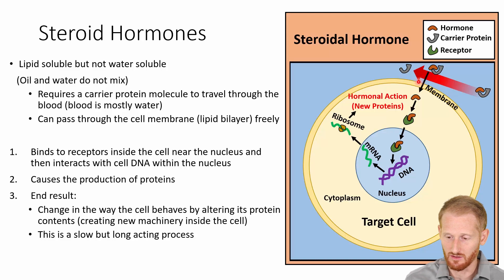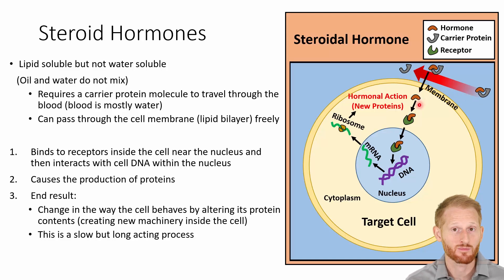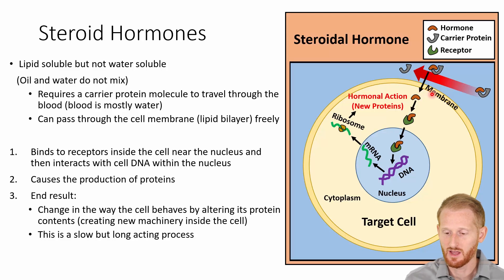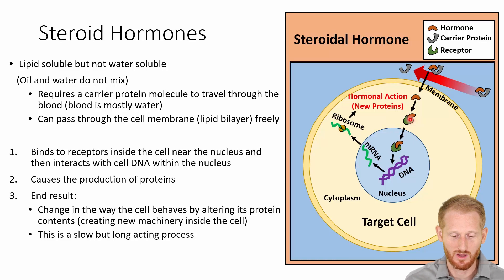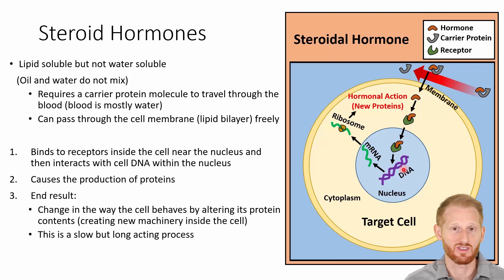Once they get to the cell they're trying to act on, the protein carrier is removed from the hormone. The hormone then goes right through the cell membrane because it's lipid-based and the cell membrane is a bilayer lipid membrane — it is fat-soluble. The hormone can go right in and bind with the cell receptor that's either in or near the nucleus.